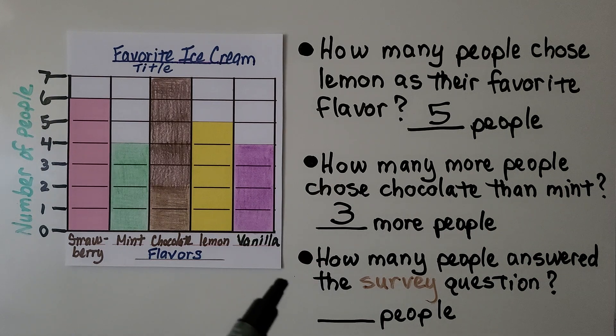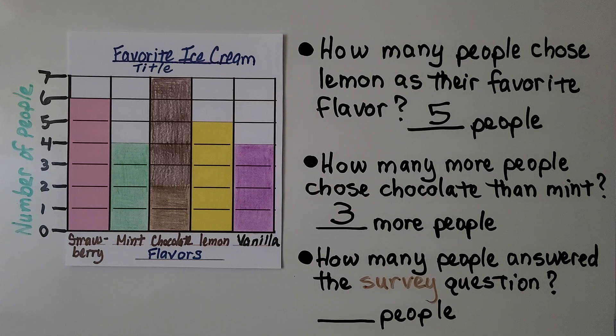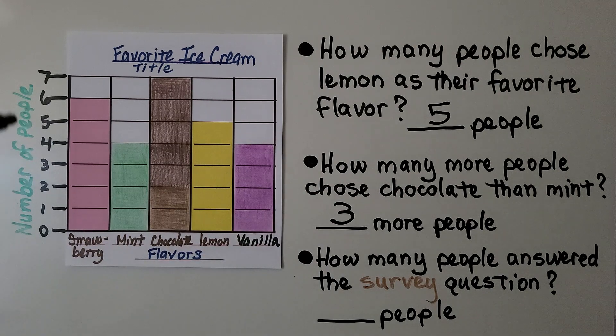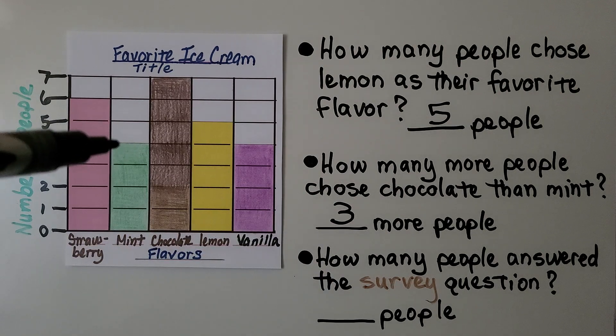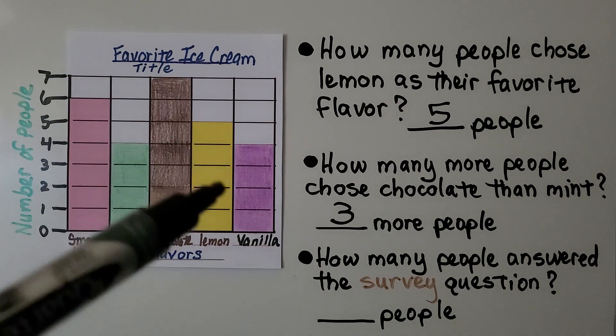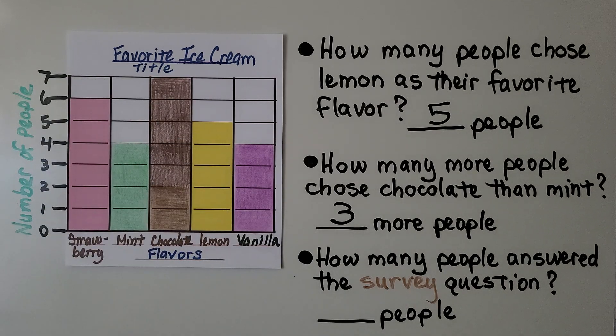This question says, how many people answered the survey question? Well, the only way to know how many people answered the survey question is to add up all of the totals. We have six for strawberry, four for mint, seven for chocolate, five for lemon, and we have four for vanilla.